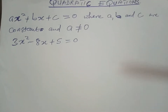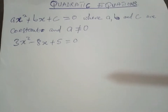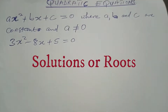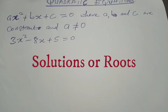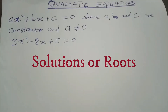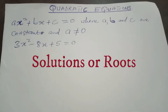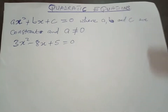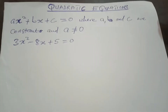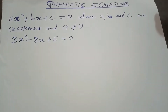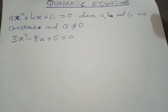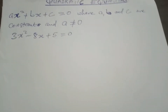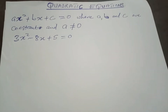Another fact about quadratic equations is that the answers are called solutions or roots. So an exam question might ask you to find the solutions or find the roots — they are just asking you to find the value of x. In general, a quadratic equation has two solutions or two roots, which may be equal or not. So when you solve for the variable, you will get two answers — either the same answer repeated or two different answers.